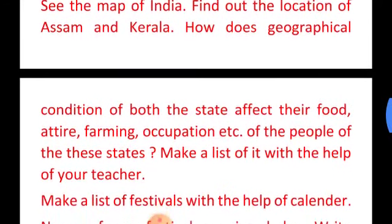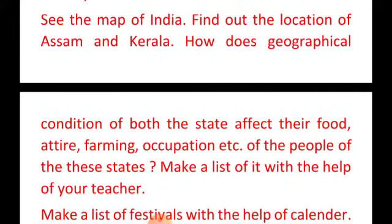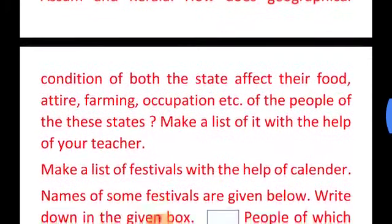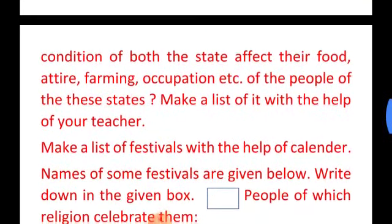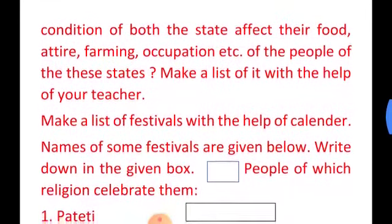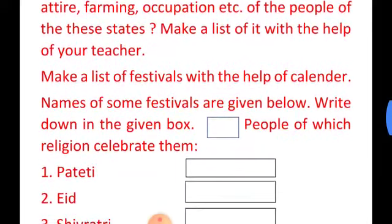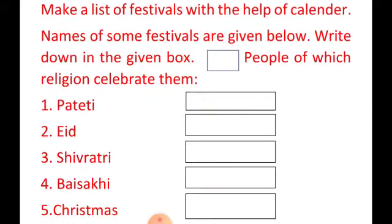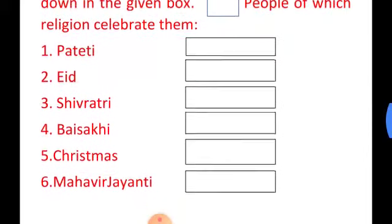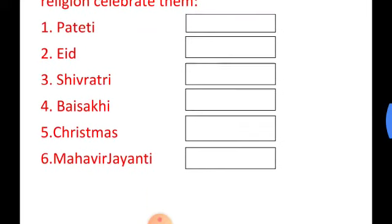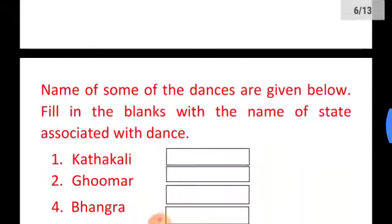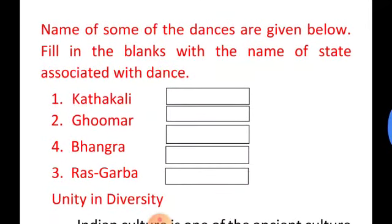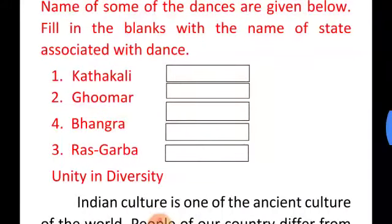Now you can do this activity: using a map of India, find out the location of Assam and Kerala and how the geographical conditions of both states affect their food, attire, farming, occupation, etc. Make a list of festivals with the help of a calendar. Names of some festivals are given below — write down in the box which religion celebrates them. Also, names of some dances are given and you are supposed to write the corresponding state.